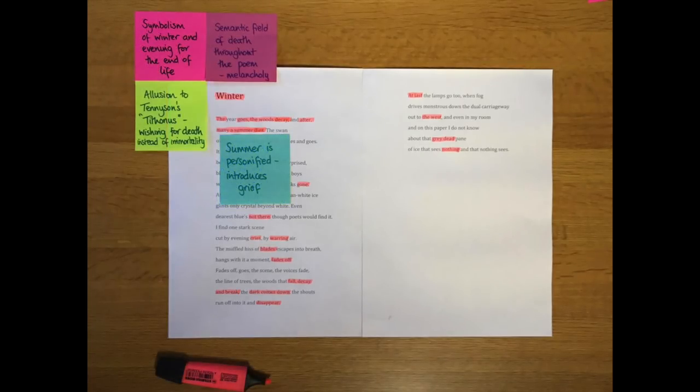One of the things that he changes from Tennyson's words is that by putting the full stop after dies, he does something interesting. Because Tennyson's words are that after many a summer dies the swan. So Tennyson's written this inverted sentence that brings the swan to the end of the sentence for emphasis. But it's the swan that dies. Morgan puts in a full stop which means that it's summer that is personified and it's summer that dies. And with that death in the first two lines of the poem you've got an introduction of the idea of grief.